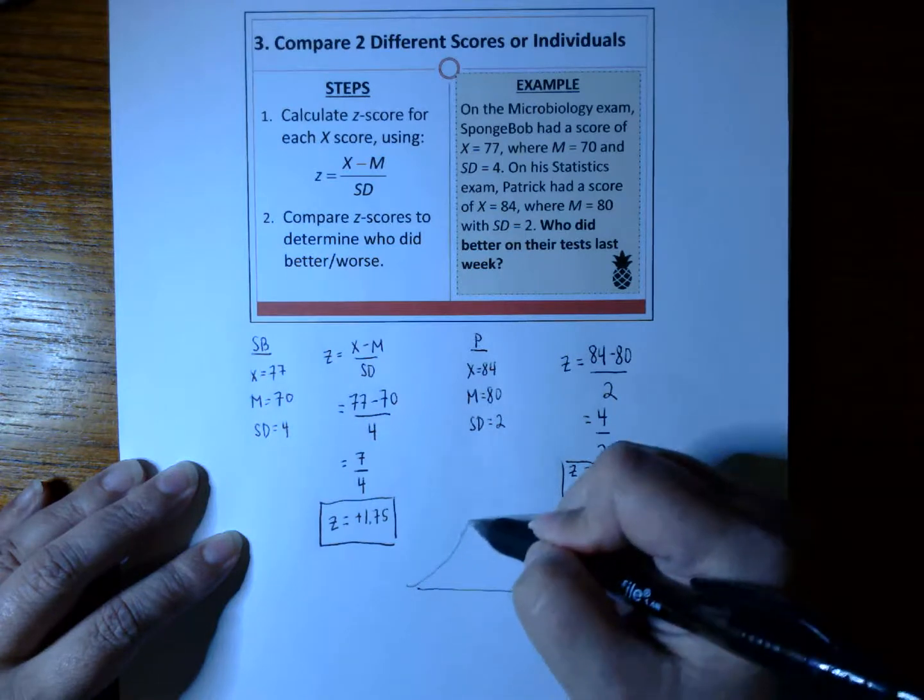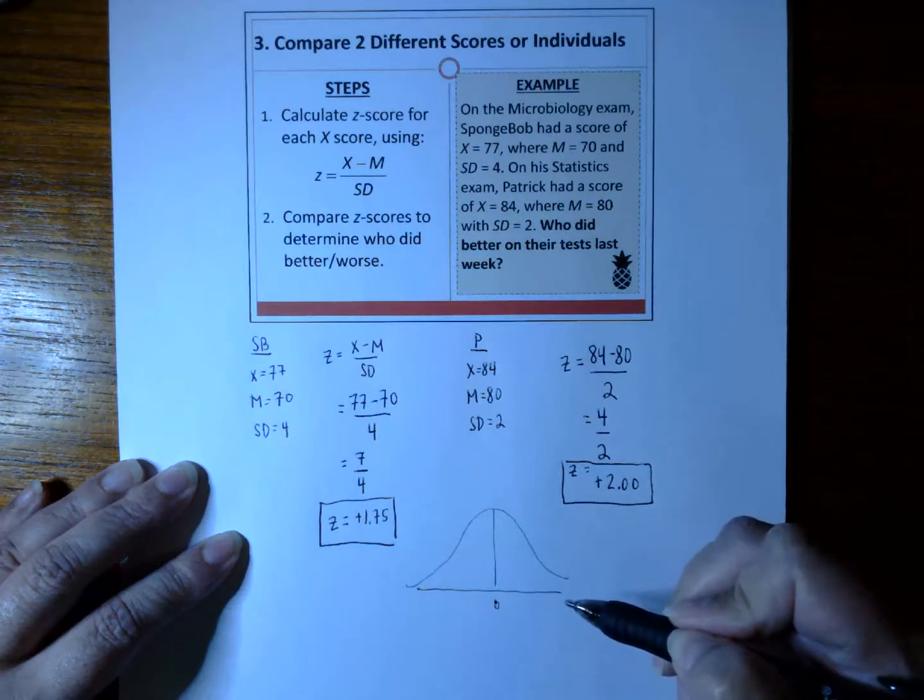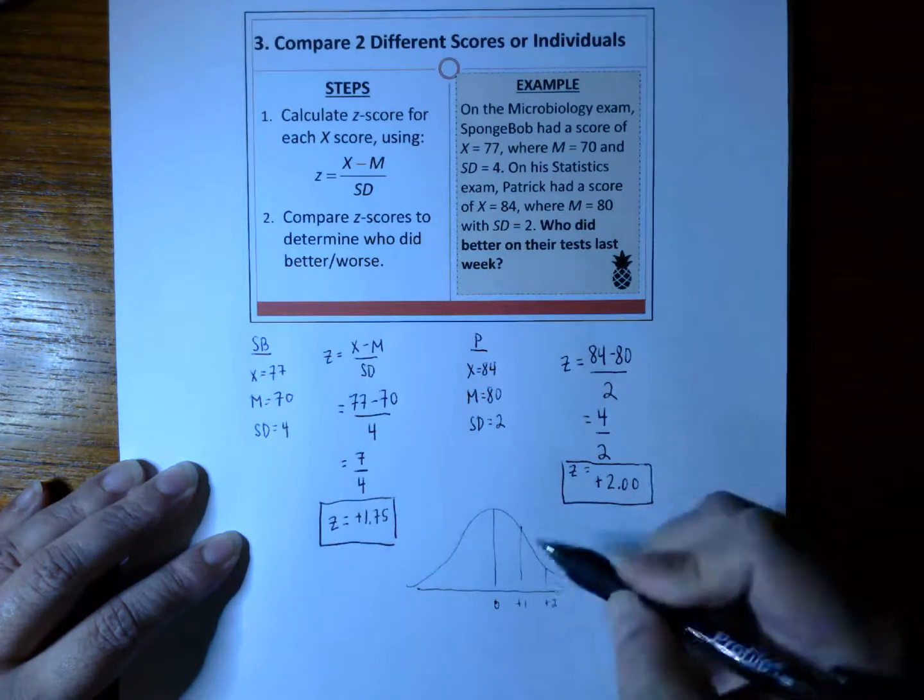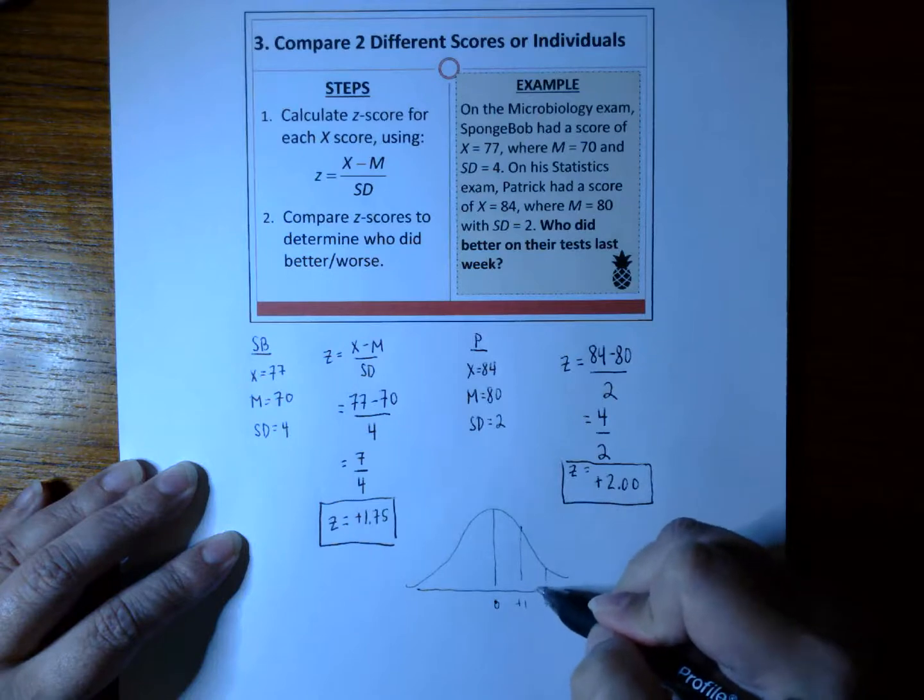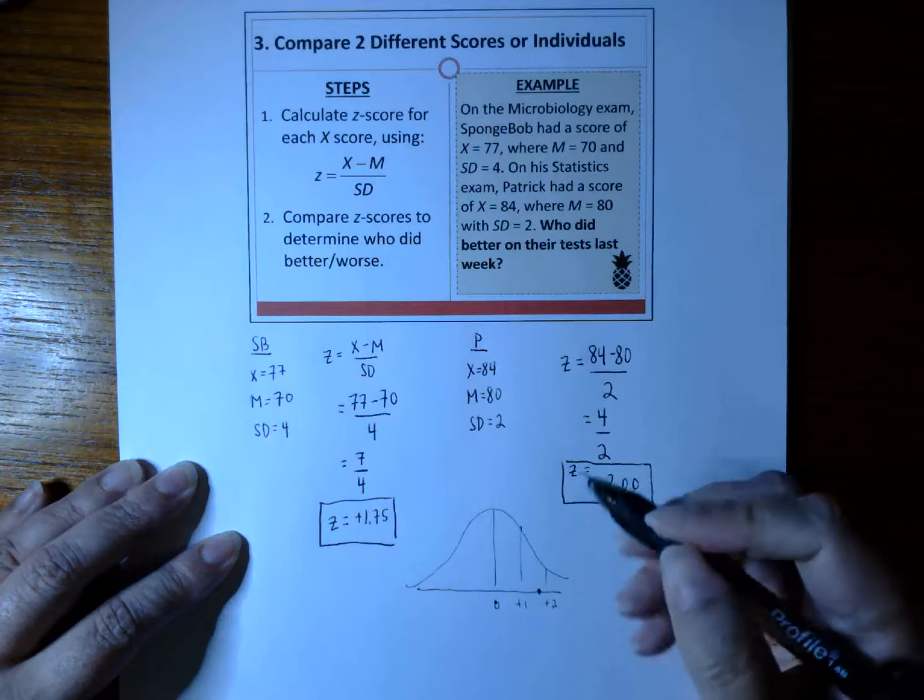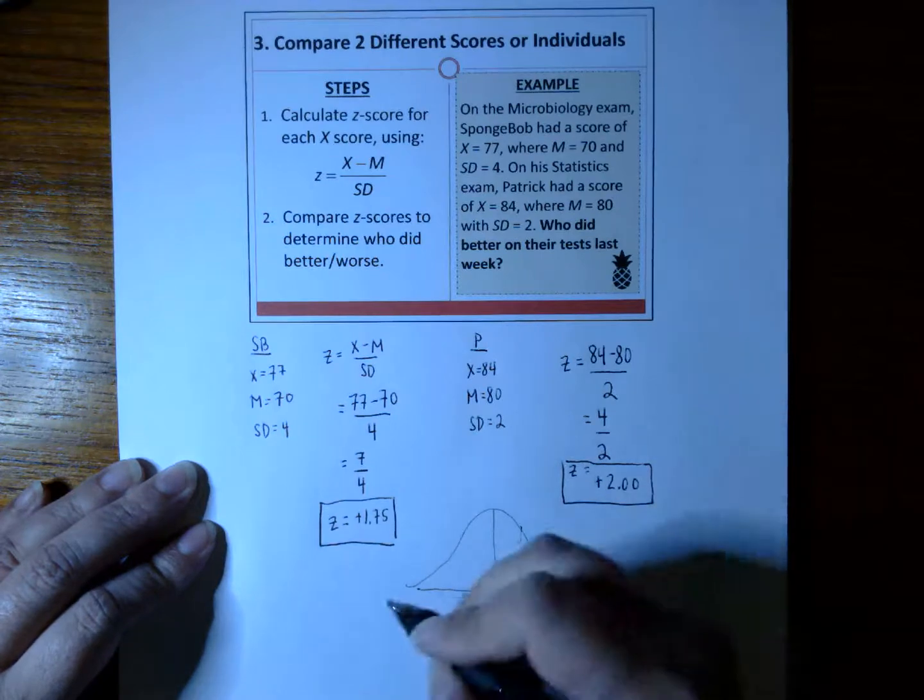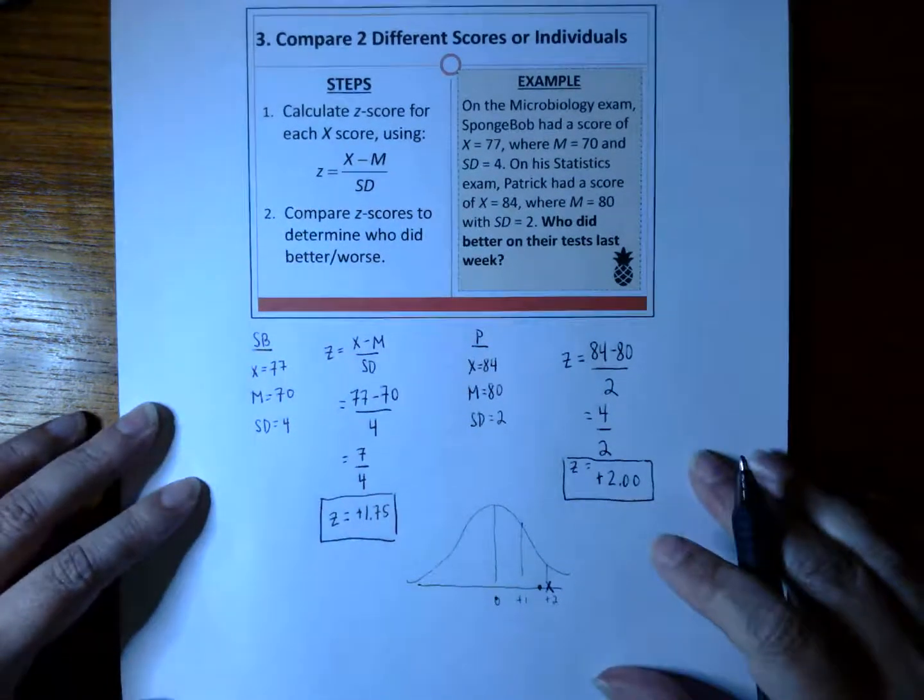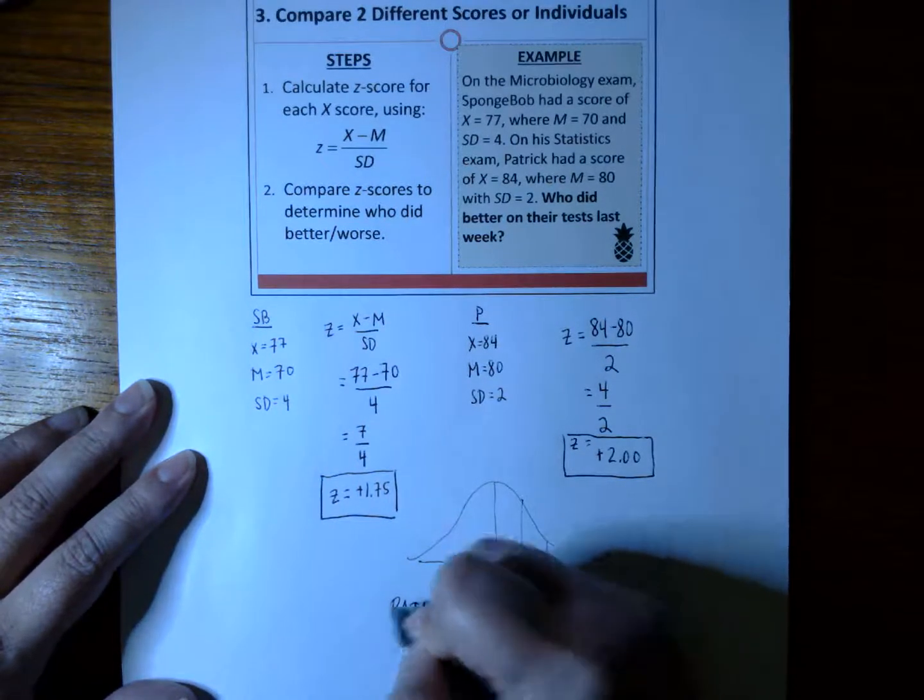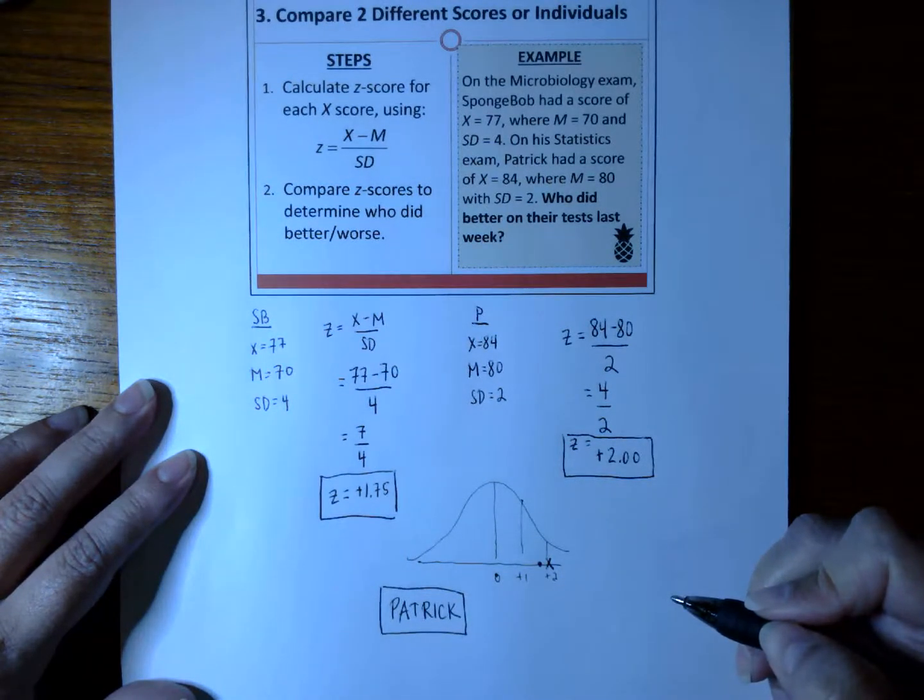If we were to graph them on a normal distribution, remember our Z-score at the center is always 0, and this is a plus 1, and this is a plus 2. If we were to graph SpongeBob, SpongeBob fell right about here at a plus 1.75. But where did Patrick fall? Patrick fell above it, higher than it. Our final answer here is that Patrick has a higher Z-score than SpongeBob. So Patrick did better.